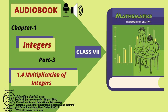Similarly, minus 4 plus minus 4 plus minus 4 plus minus 4 is equal to 5 multiplied by minus 4, which is equal to minus 20. And minus 3 plus minus 3 plus minus 3 plus minus 3 is equal to dash, which is equal to dash. Also, minus 7 plus minus 7 plus minus 7 is equal to dash, which is equal to dash.